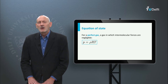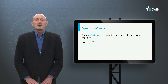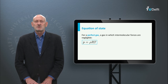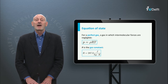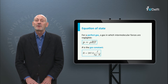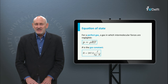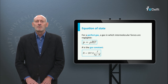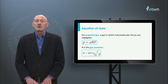Furthermore, we can use the equation of state of a perfect gas: P is rho times R times T, in which R is the so-called gas constant. It is 287 joules per kilogram Kelvin. A perfect gas is a gas in which the forces between the molecules are negligibly small.